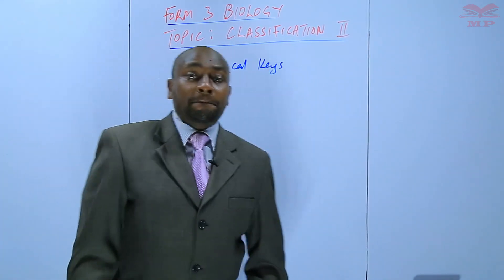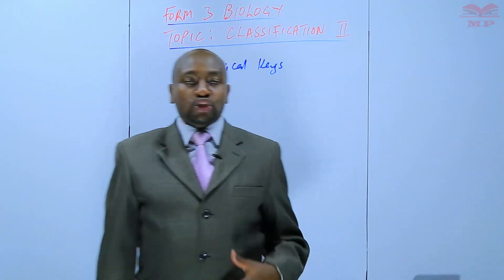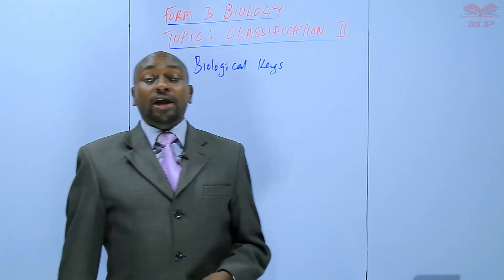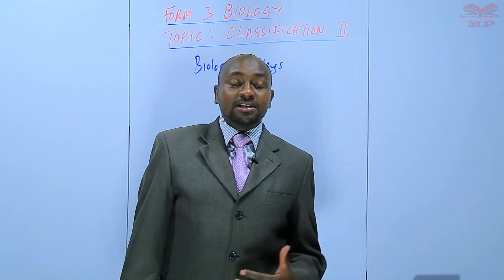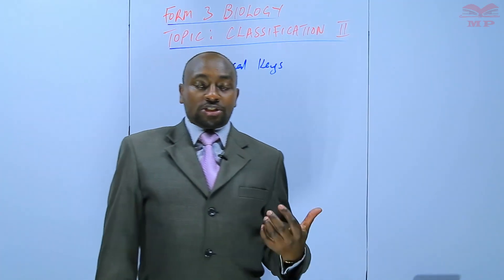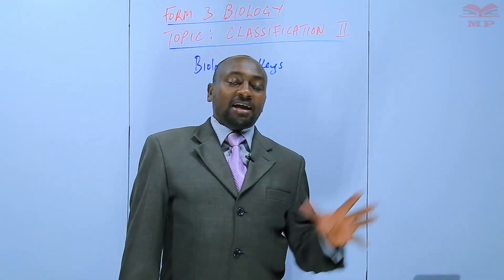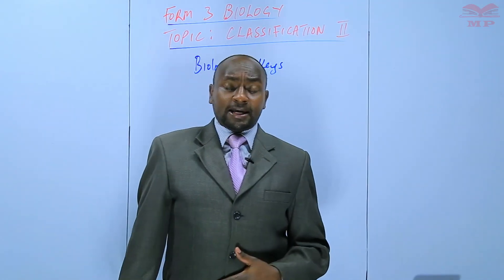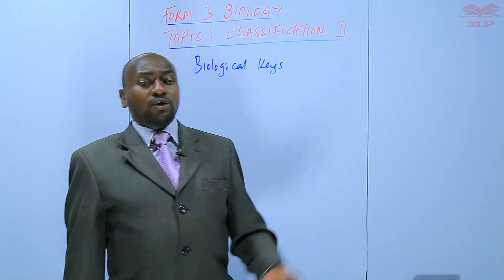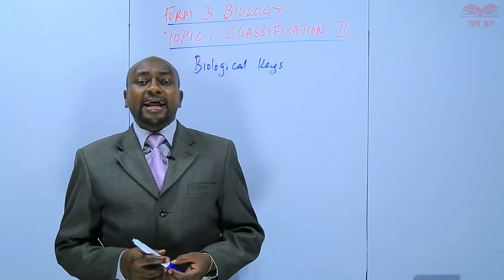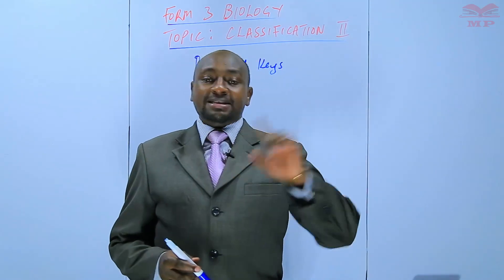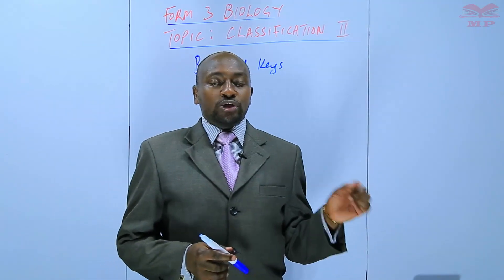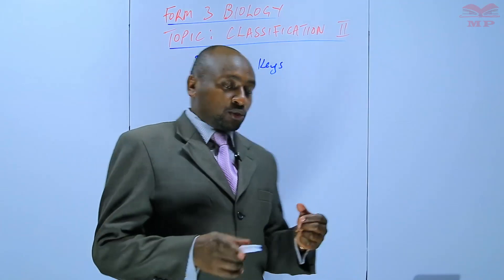Biological keys are simply identification keys. They are keys used by biologists to identify living organisms, acting as a guide to help a biologist or a scholar of biology identify either plants, animals, or whichever organisms are displayed. One of the most common biological keys is the dichotomous key. The word dichotomous comes from the word dichotomy, which means branching into two.